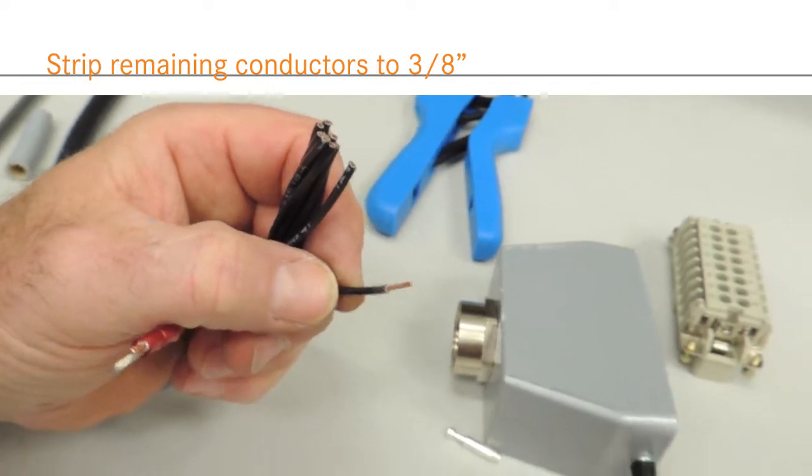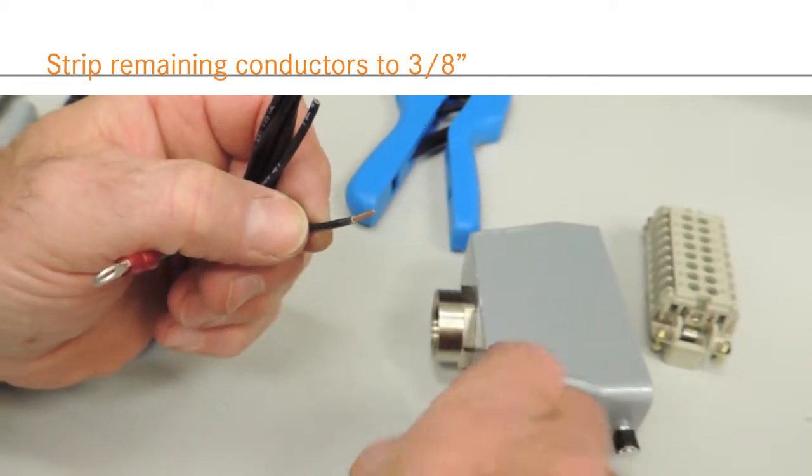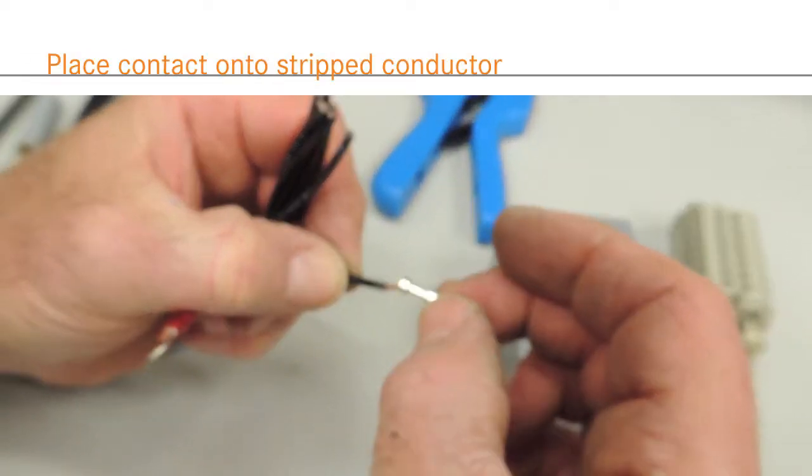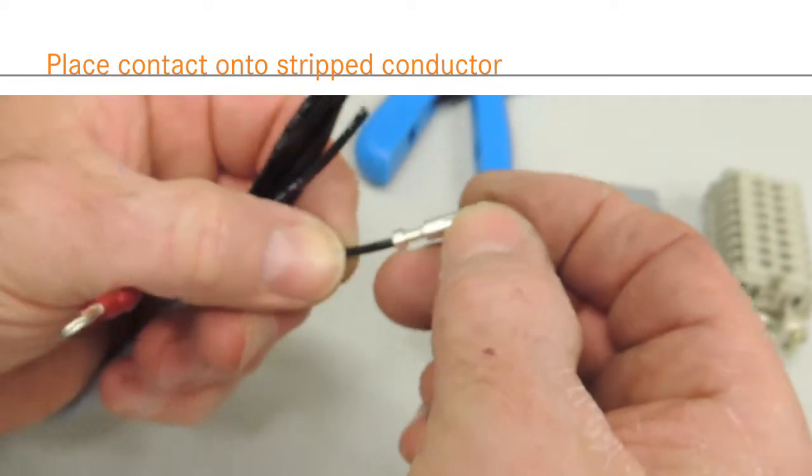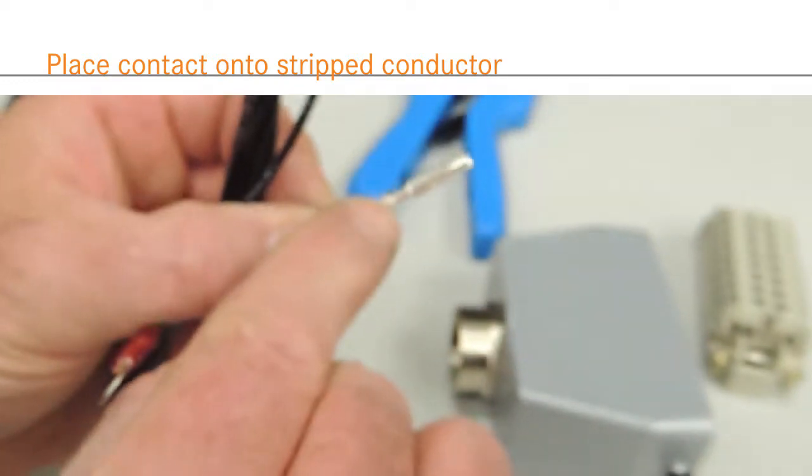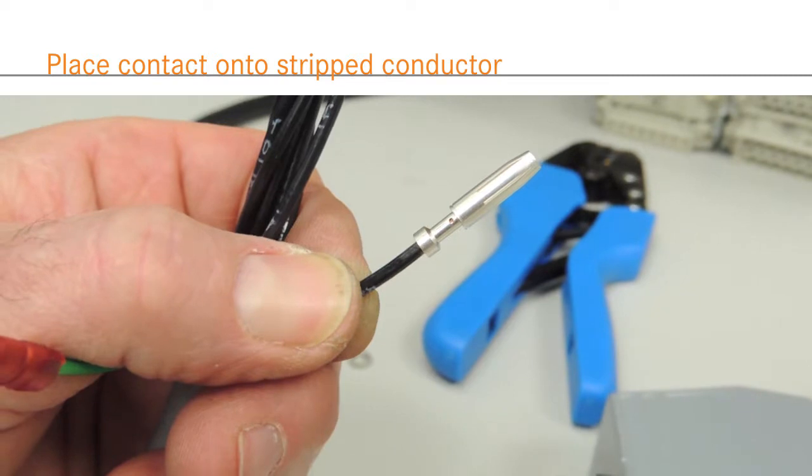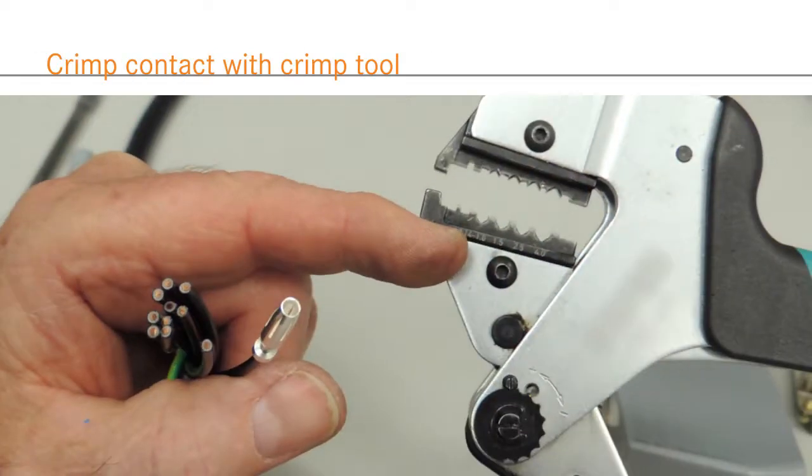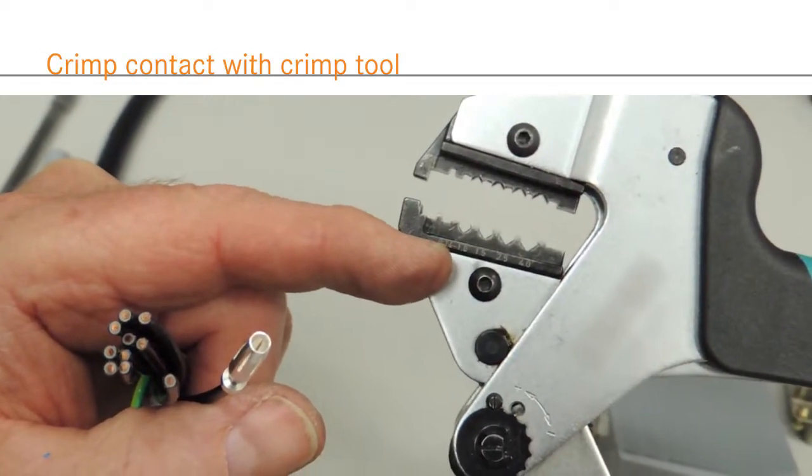Insert the stripped wire into the crimp contact. In this example, we are using 2.5 millimeter diameter silver-plated machined contacts. You should be able to see the copper through a small hole in the side of the contact. If not, strip more of the insulation.